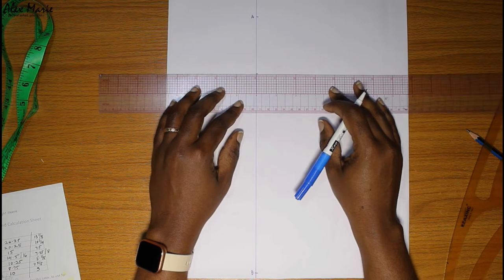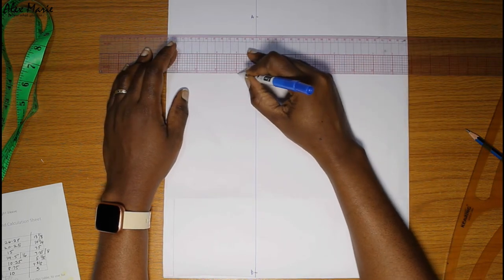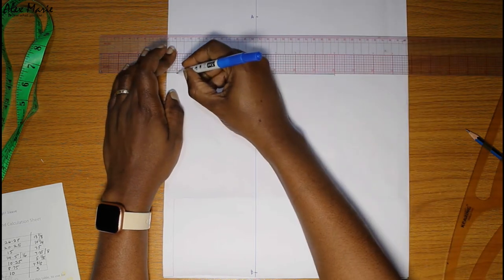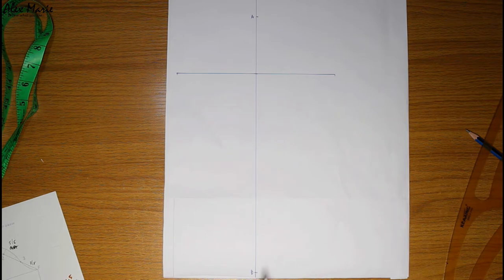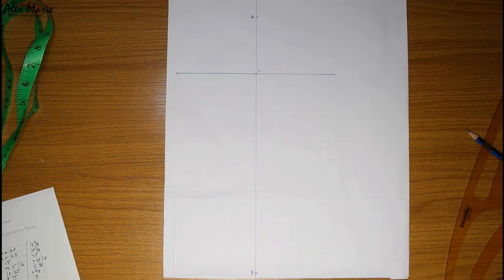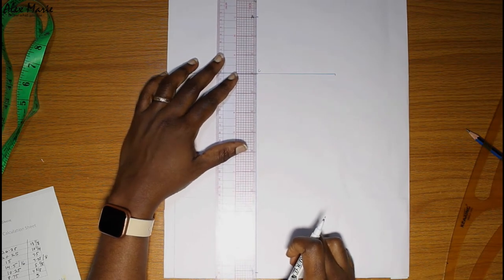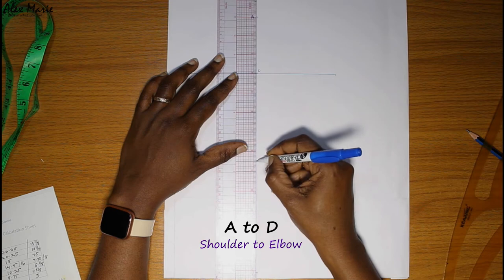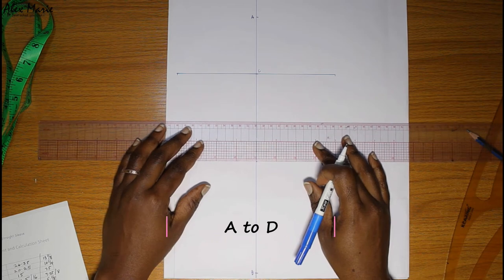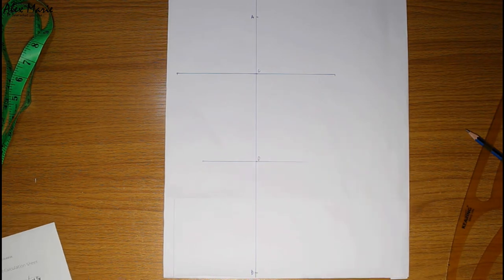So that's point C. Now at point C we're going to put in our bicep line. Make sure it's a straight, perpendicular line. Next, A to D down is your elbow depth—that's your shoulder to your elbow. Here I'm just going to put in a short guideline for now. So we're just establishing the grid and the proportions of the sleeve.